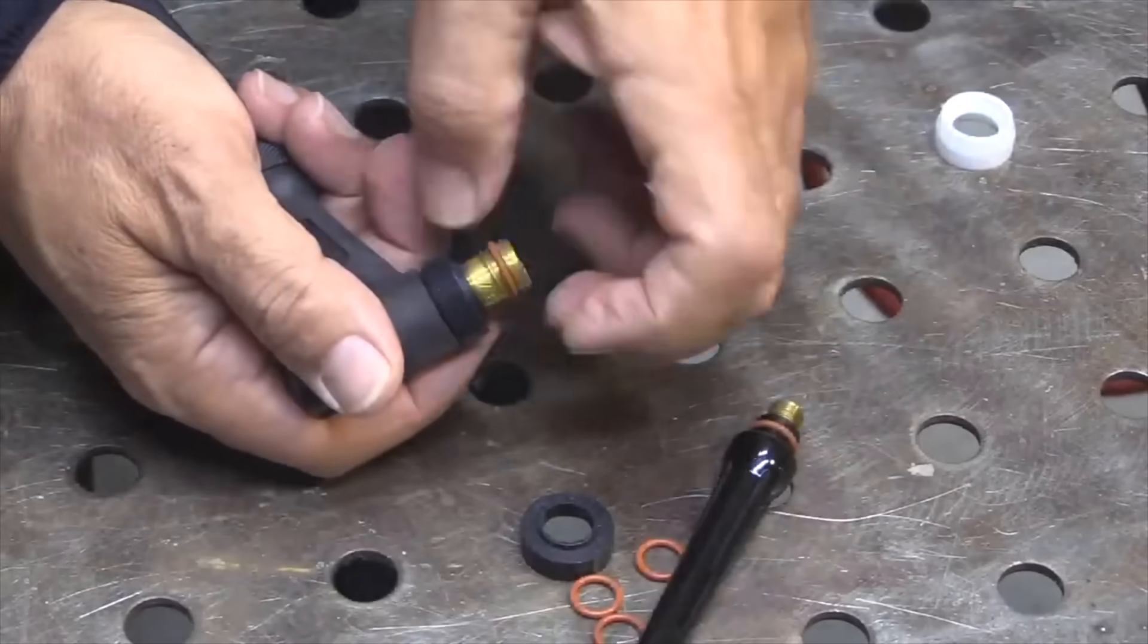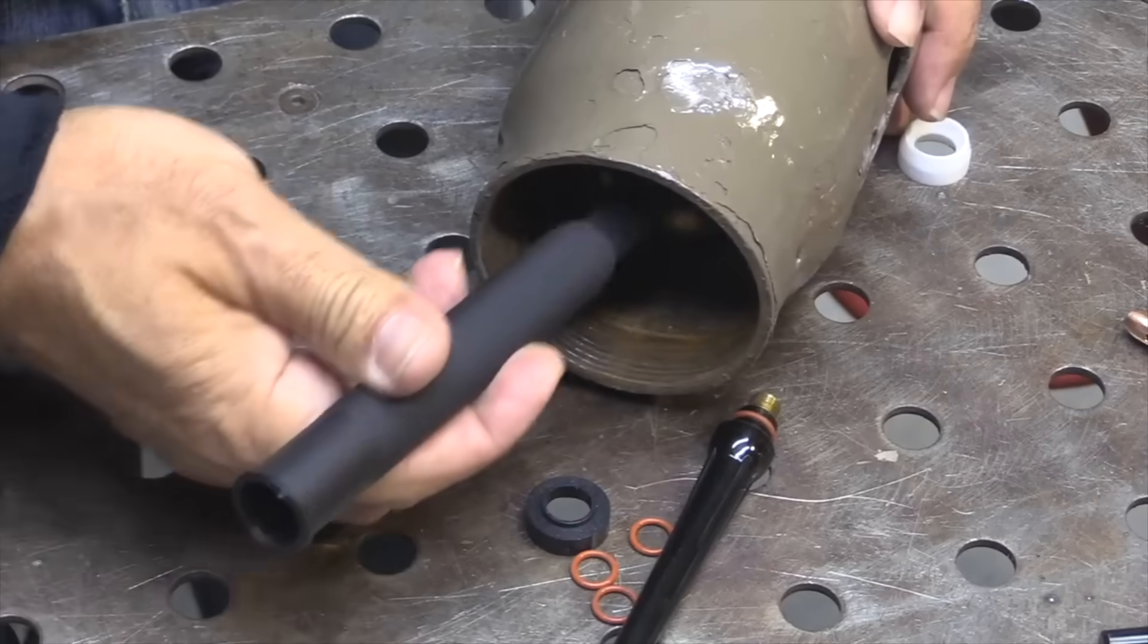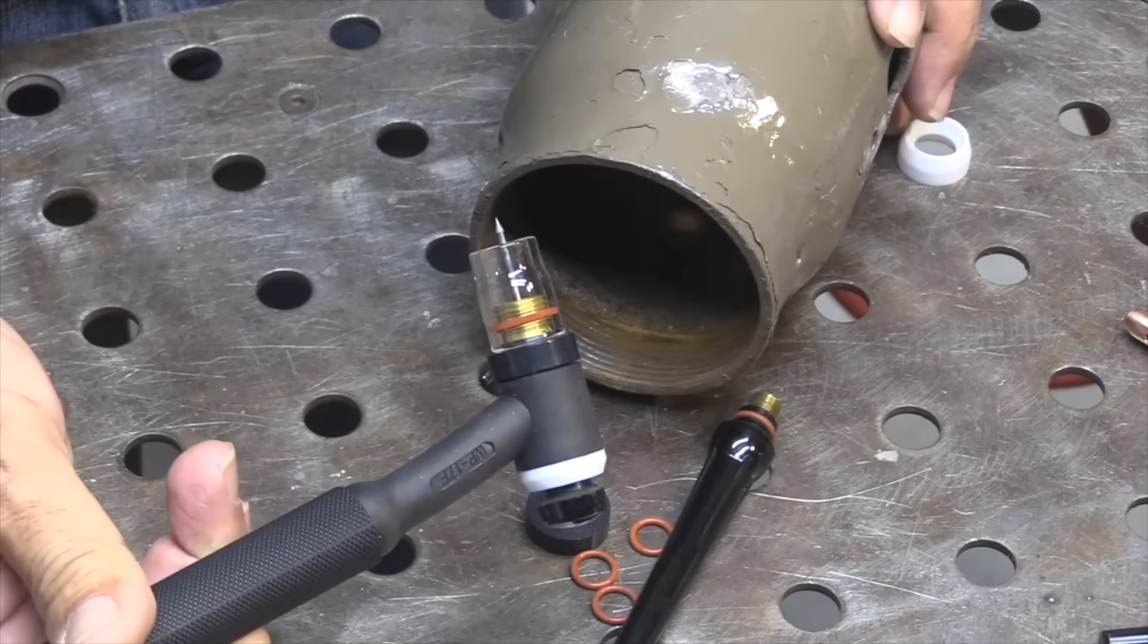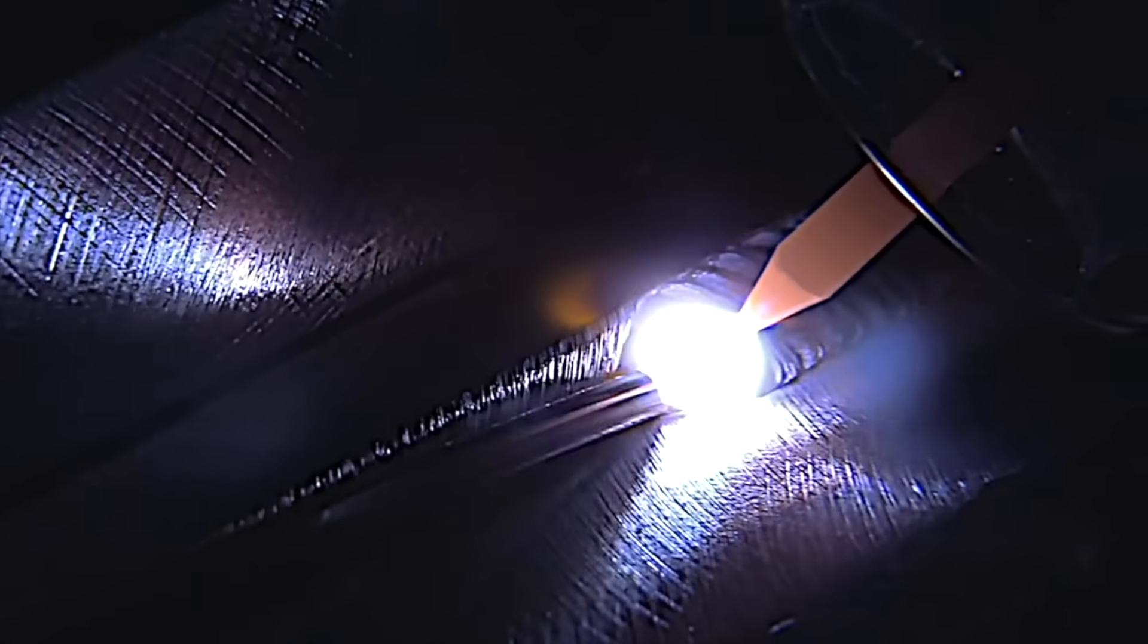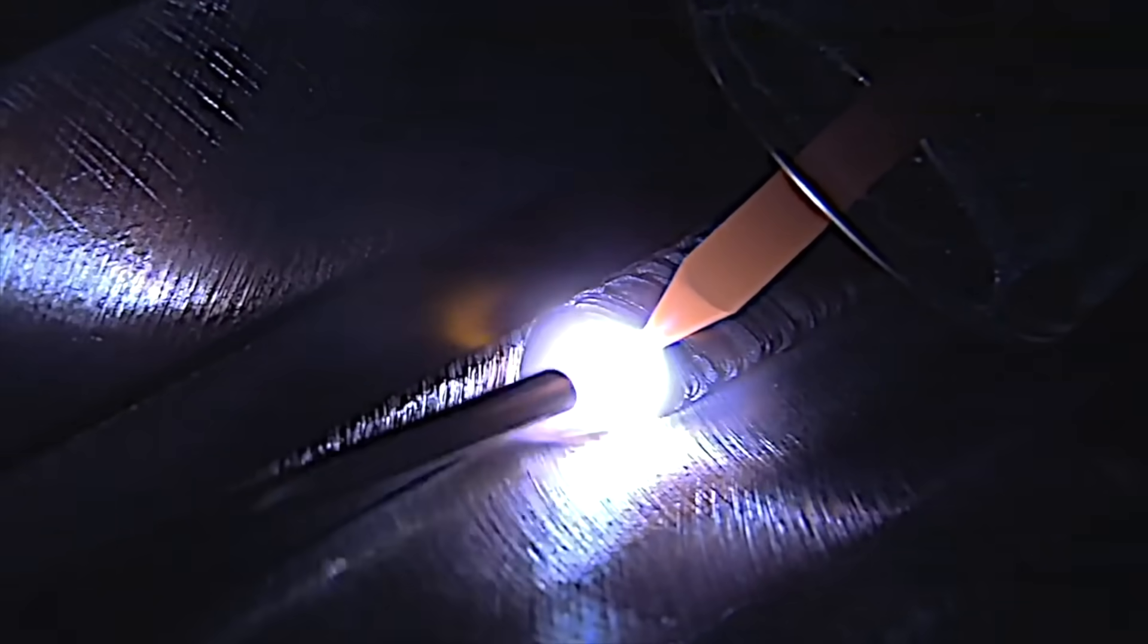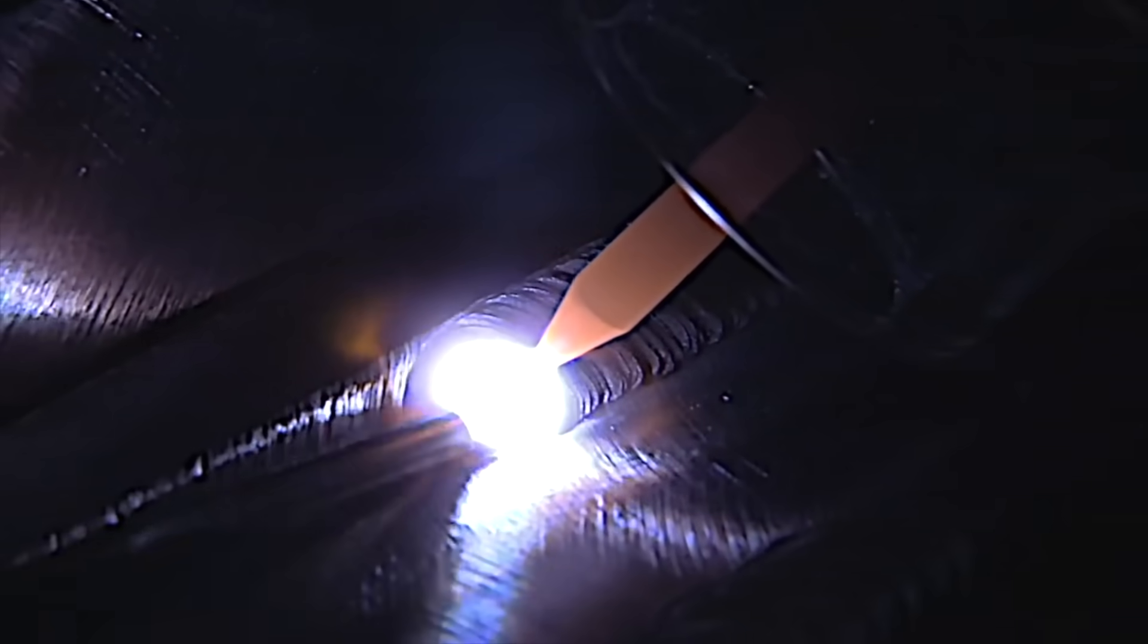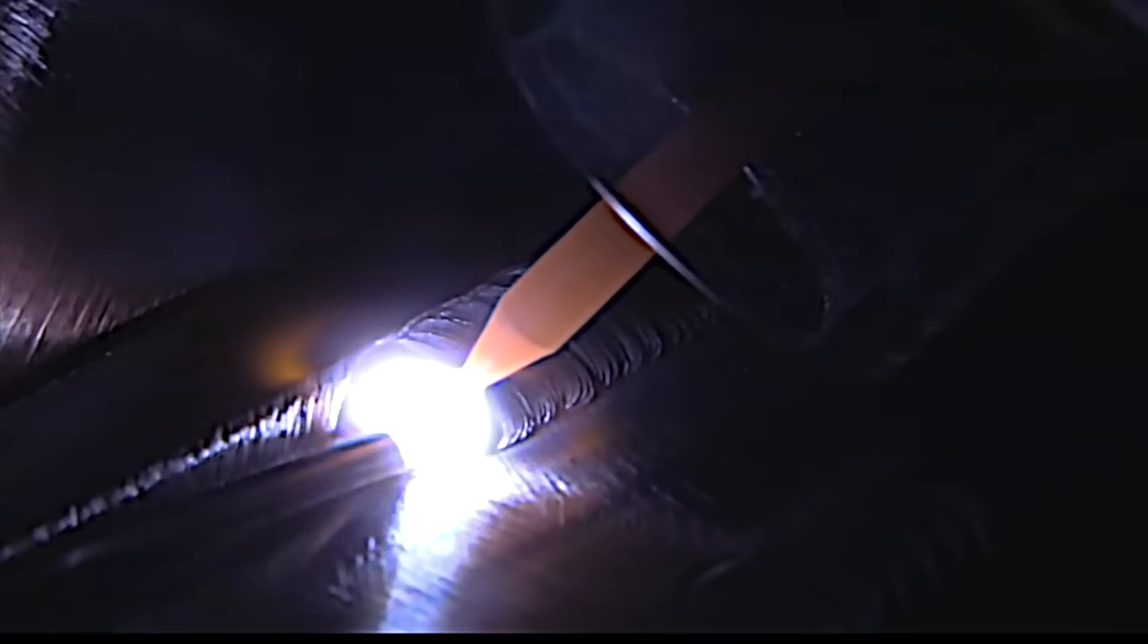One benefit you notice right away is it just shrinks the overall size of the torch. It makes it more maneuverable, makes it able to reach into tighter spots. The clear cup that comes with the number eight cup really lights things up. I started using clear cups strictly to film. I was skeptical but I saw right away they really helped me see better.